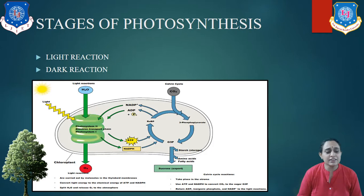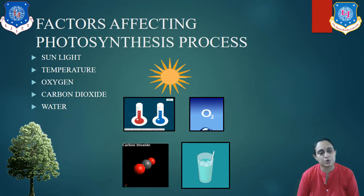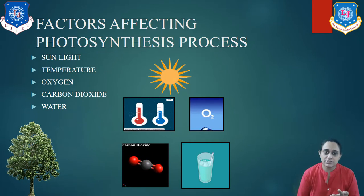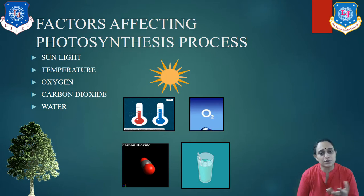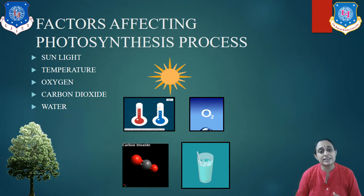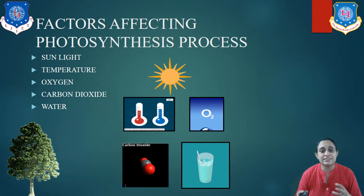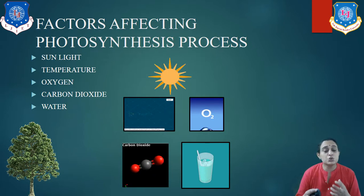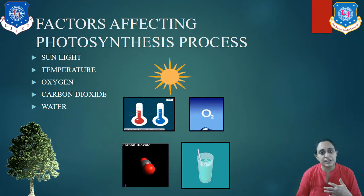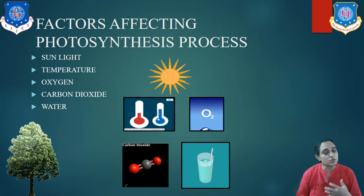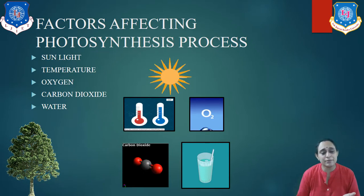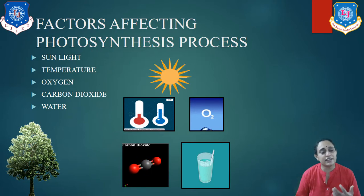There are some factors affecting photosynthesis: sunlight, temperature, oxygen, carbon dioxide, and water. During the photosynthesis process, the plant requires sunlight of a specific wavelength or specific value. If the intensity of solar radiation increases, the process of photosynthesis decreases, because the chlorophyll in the plants may be damaged by higher intensity radiation.